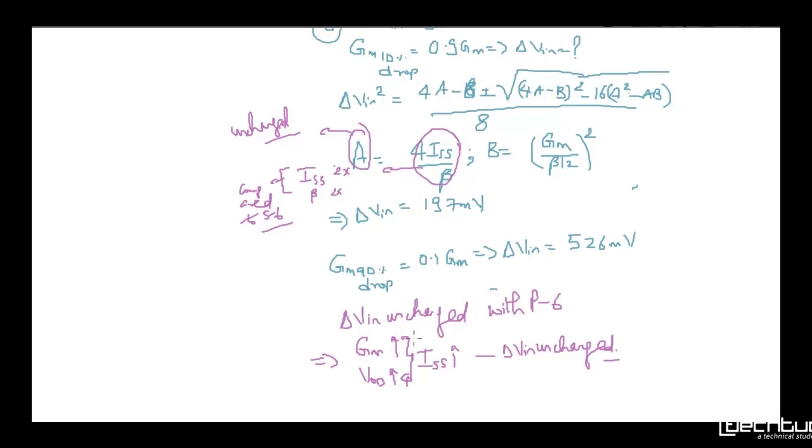We are concluding from this problem that delta VIN remains unchanged with respect to problem 6. GMS increased and overdrive has increased. When you increase ISS, delta VIN is unchanged, so the linearity range will remain unchanged. Thanks for this session, we will be solving further problems. Thank you.